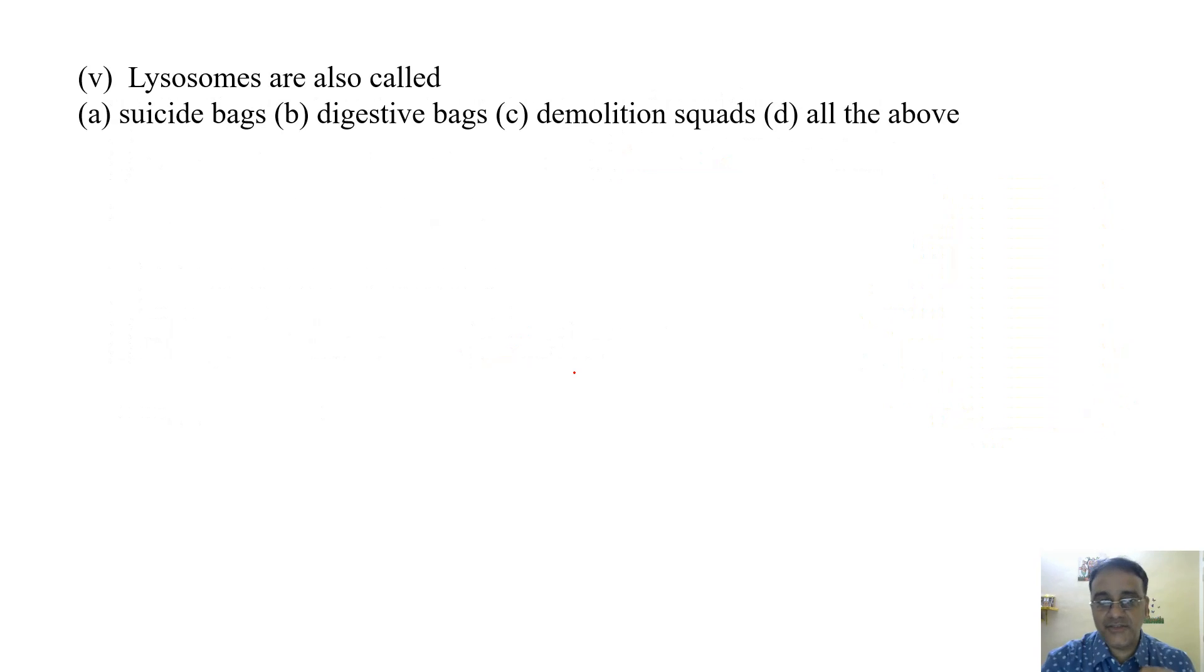Now we are moving towards the last question. Lysosomes are also called: suicide bags, digestive bags, demolition squads, or all the above. The function of lysosomes - they serve as intracellular digestive system, hence also called digestive bags. They destroy any foreign material which enters the cell such as bacteria and viruses. In this way they protect the cells from bacterial infection.